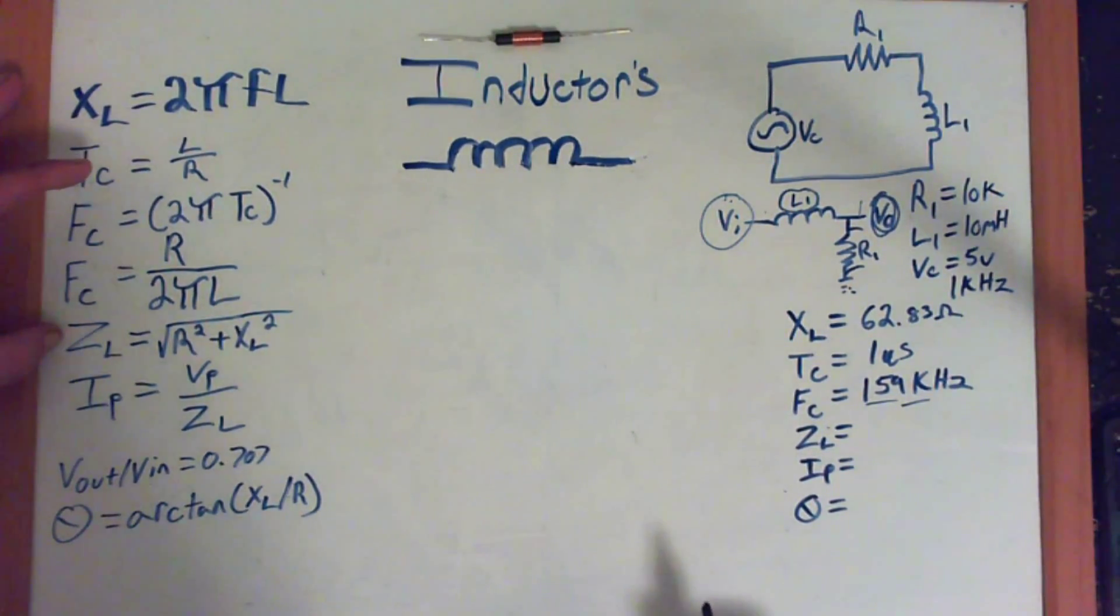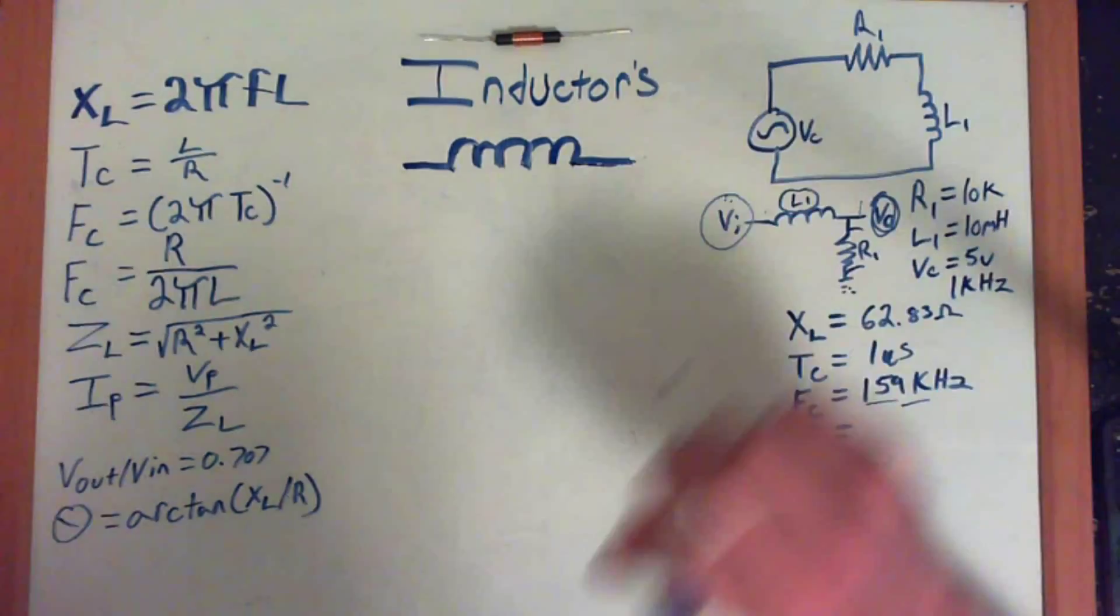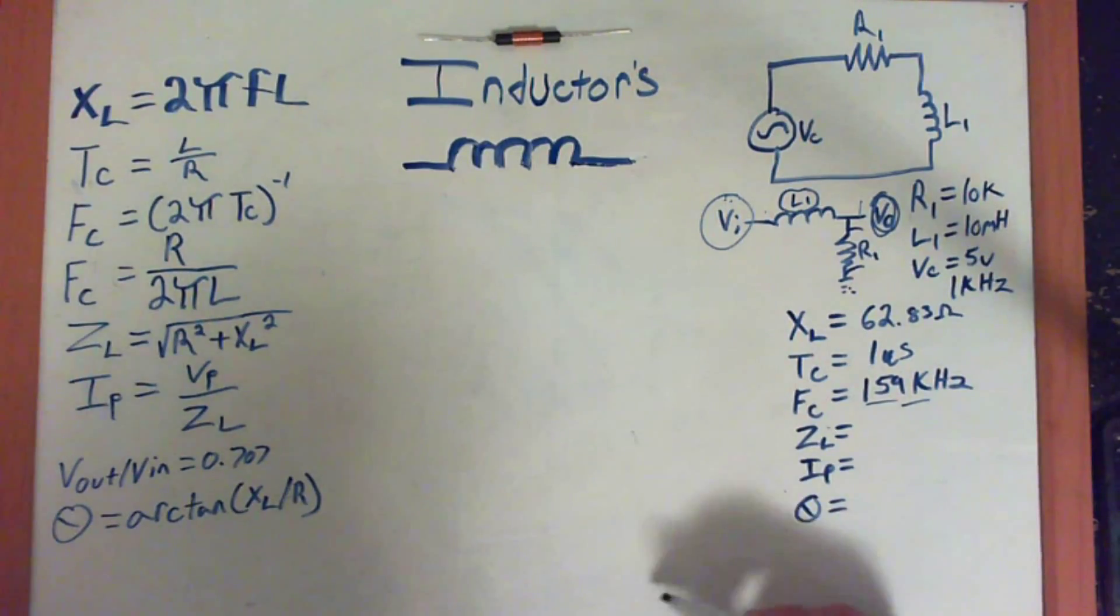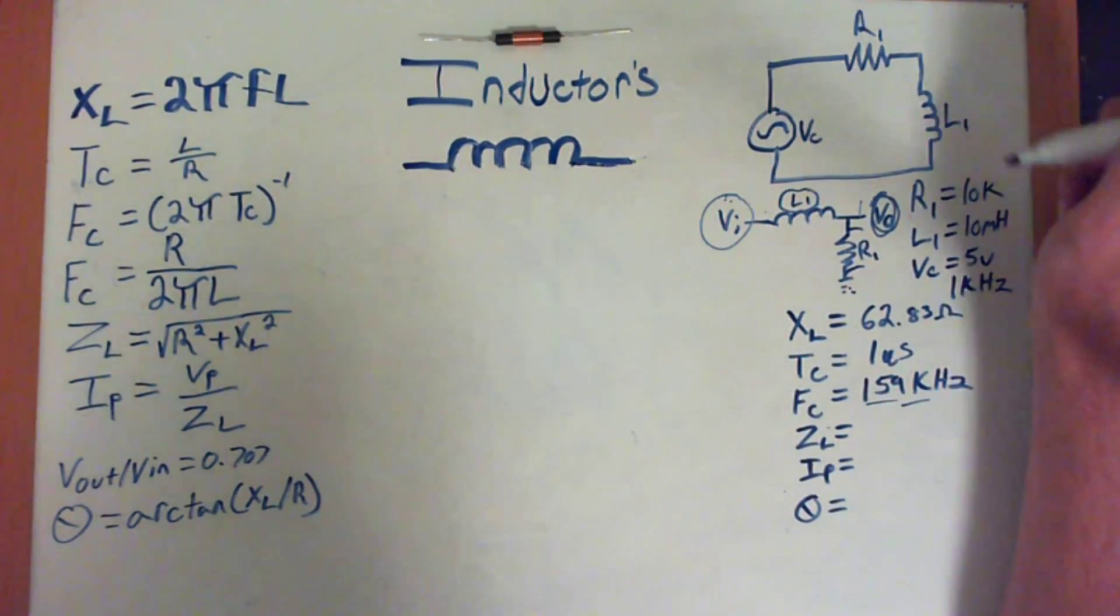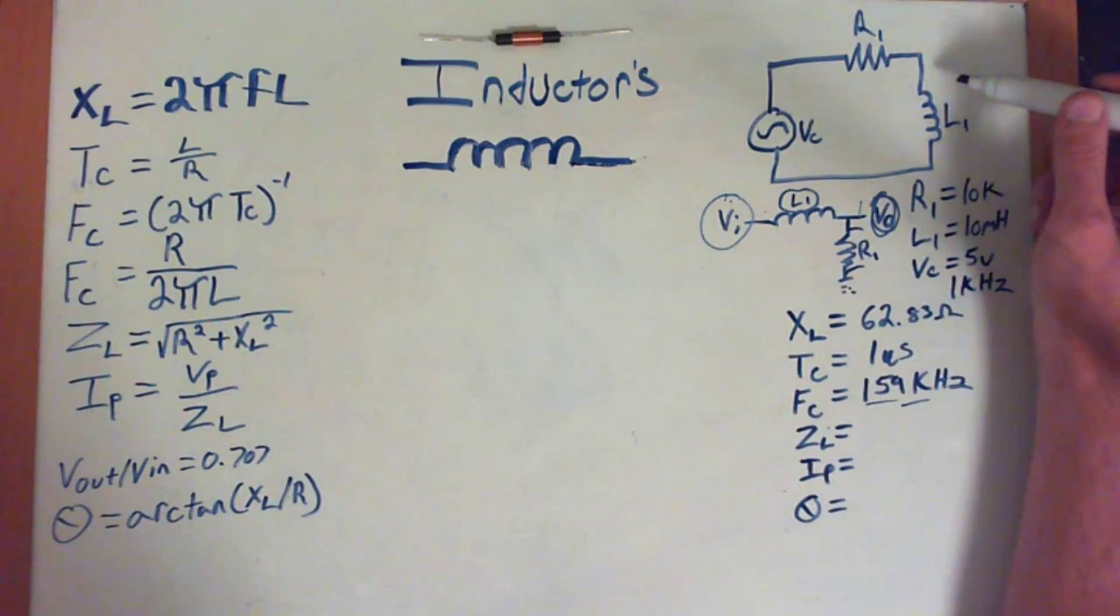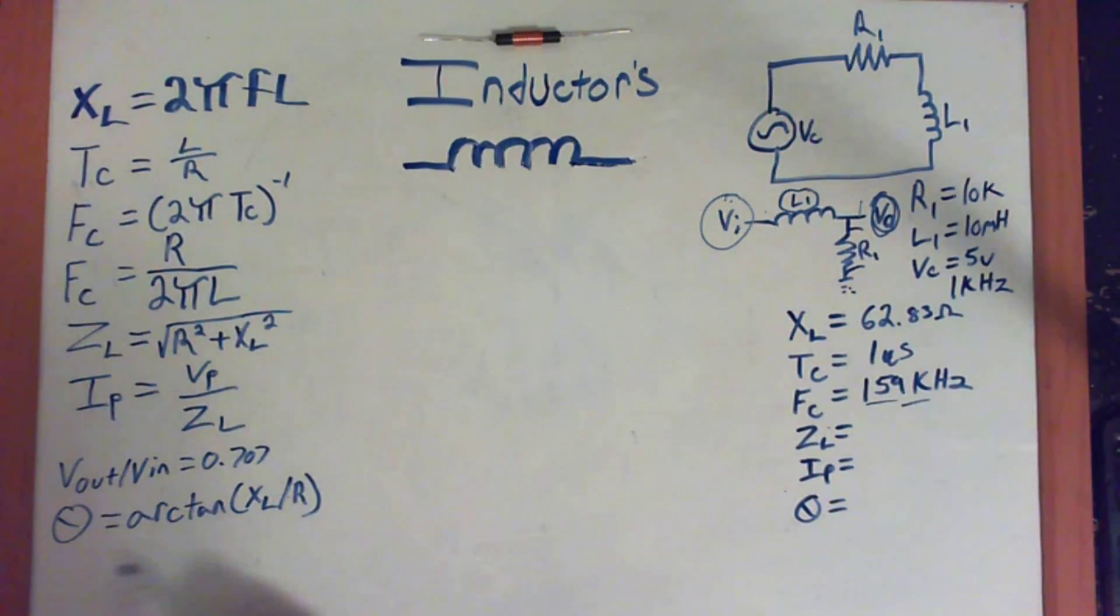So now let's move on to the Z, which Z is the impedance of the circuit. And impedance, you can't add the XL and the R1 and get your total resistance of the circuit. The reason is because the inductor leads or lags, however you want to put it, by a certain angle. Which we're going to talk about later, which is the phase angle.